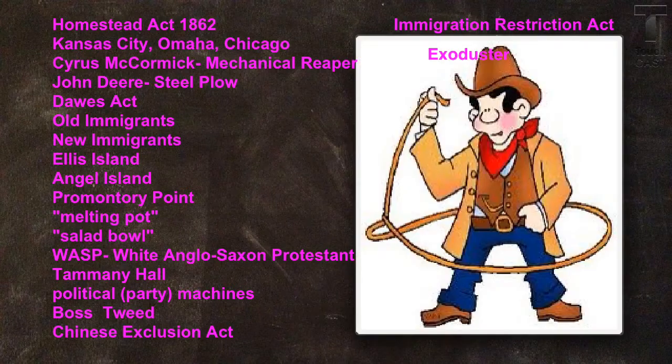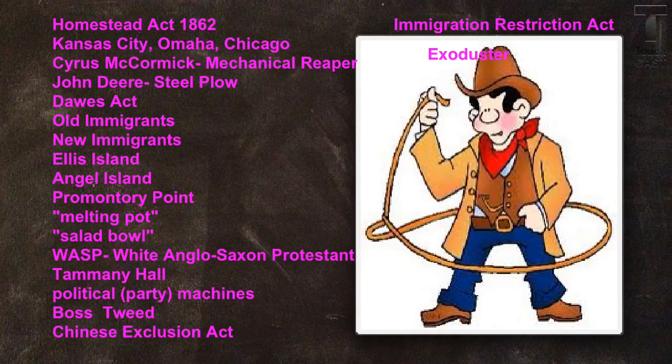The years right before and right after the Civil War are the era of the American cowboy. Cowboys conduct long cattle drives across the open range — hundreds of miles of unfenced land of the West. The open range is going to last until Joseph Glidden, a name you should know, develops barbed wire, which cheaply fences in land and helps close up the range.